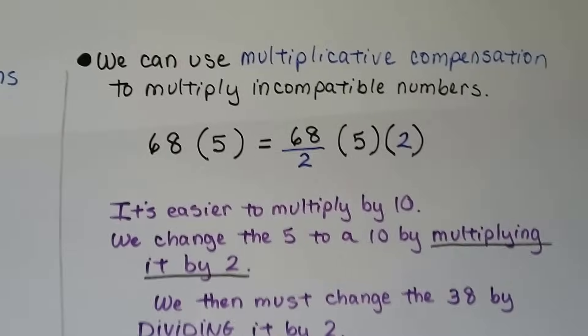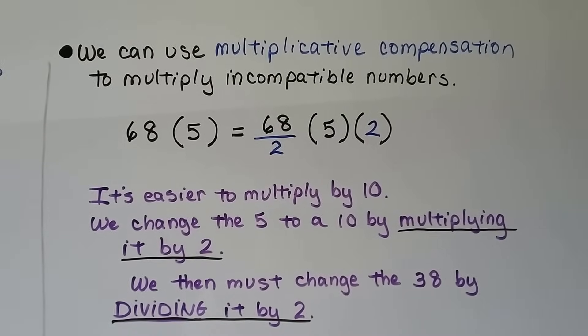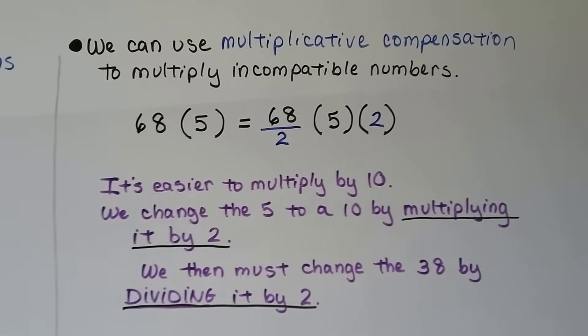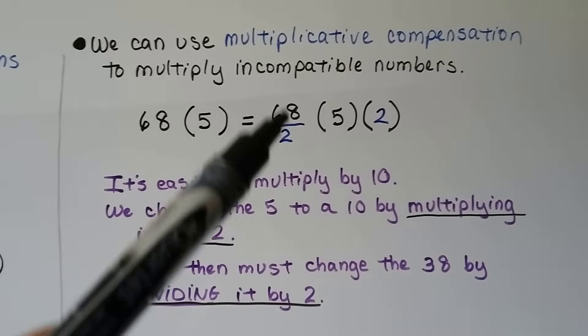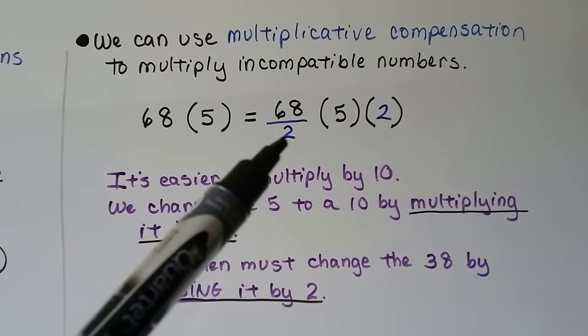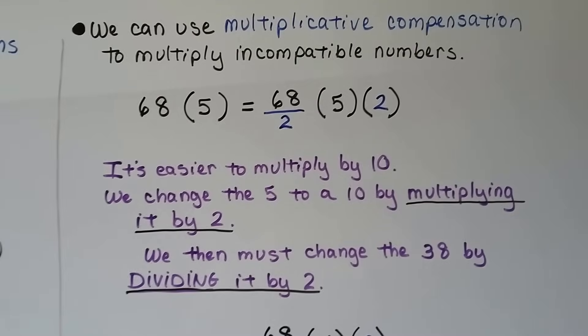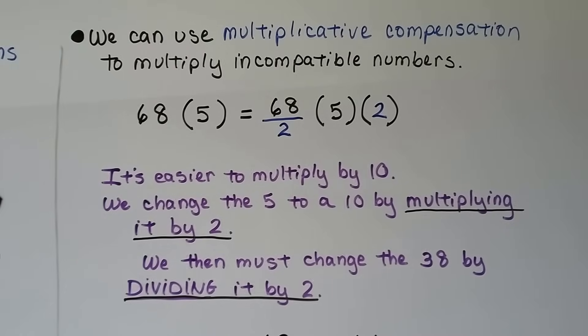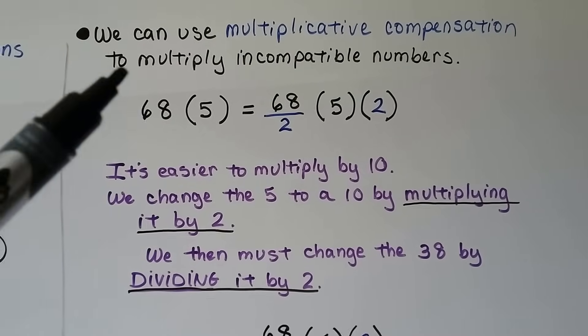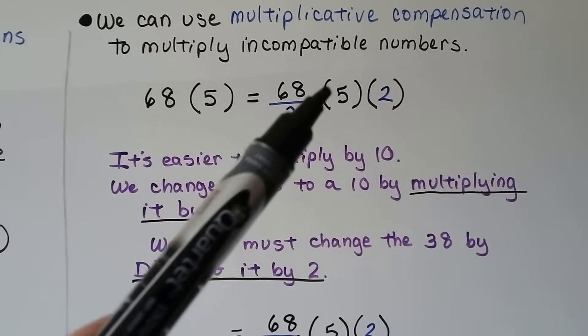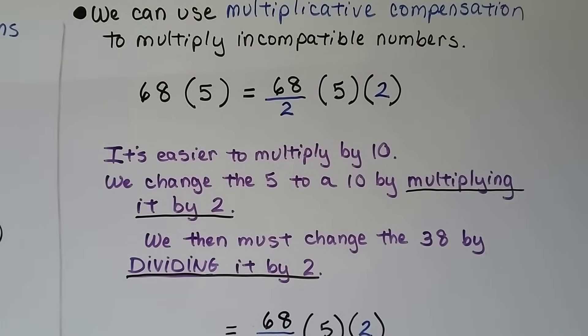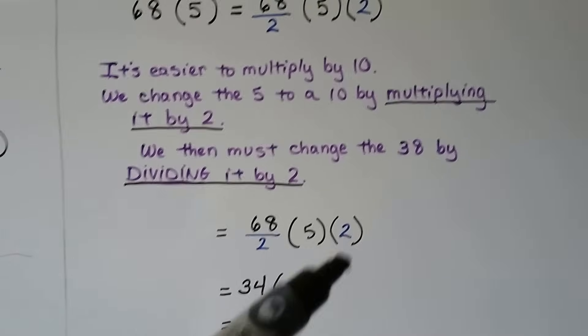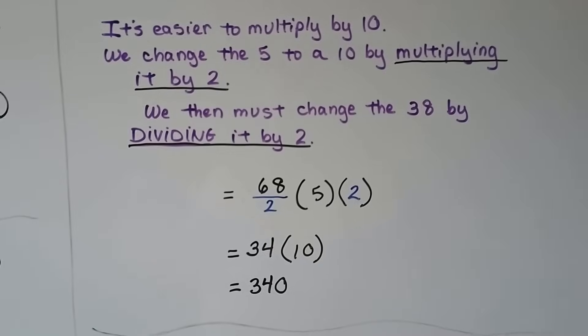We can use multiplicative compensation to multiply incompatible numbers. If we have 68 times 5, this is a little different than the other ones. We divide the first one by 2 and then multiply the second one by 2. We're dividing the multiplicand and multiplying the multiplier. 68 divided by 2 is 34 and 5 times 2 is 10. Then we can do 34 times 10.